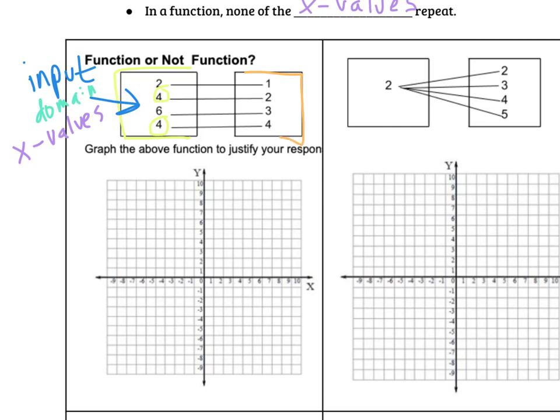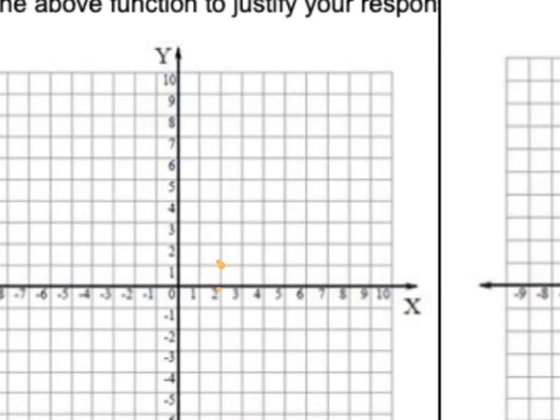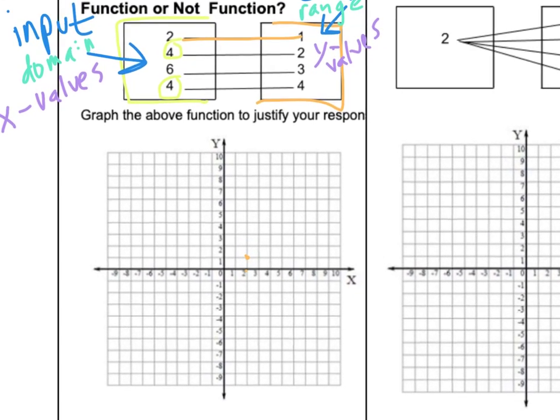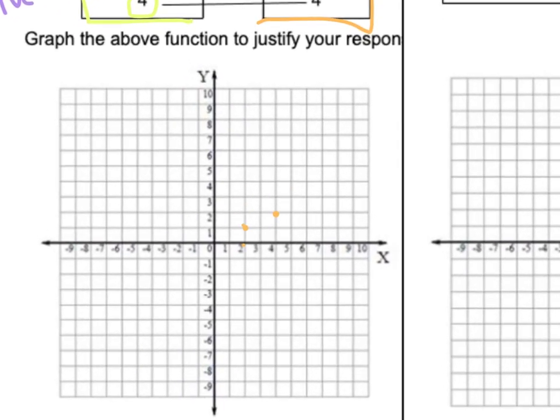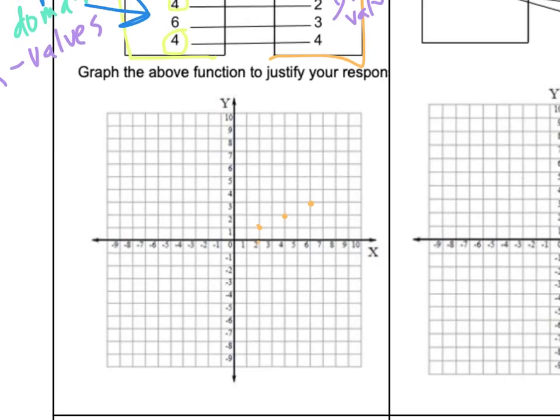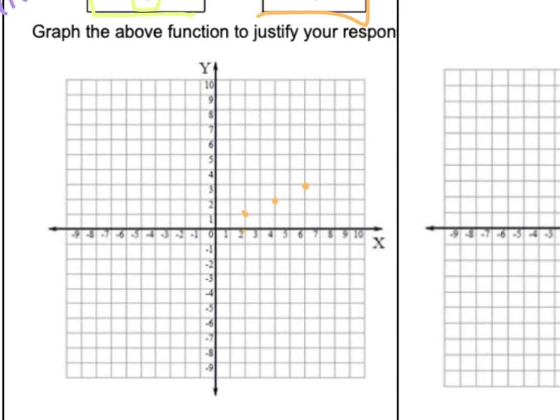Also over here, these are the outputs or the range or the y values. So I want to prove something to you. So I thought we would graph these to justify it. So let's take our inputs and our outputs. If we graph our first ordered pair, the 2 and 1, so 2 on the x and 1 on the y, that shows up right there, our first point. Our next point is 4 pairs with 2, so over 4 and up 2 is right here. Our next point is 6, 3, so over 6 and up 3, and then over 4 and up 4. So those are all of those points.